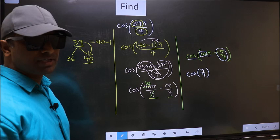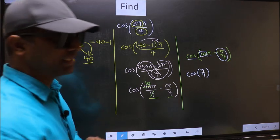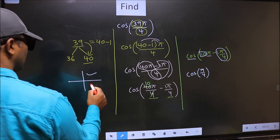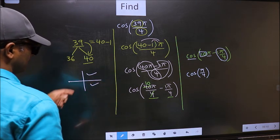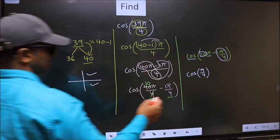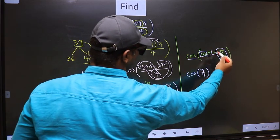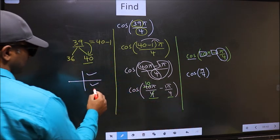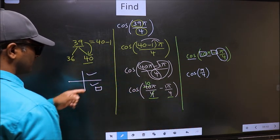And all the even multiples of pi lie in the first or fourth quadrant. To check which quadrant, we should look at this symbol. Here we have negative. That means the angle lies in the fourth quadrant.